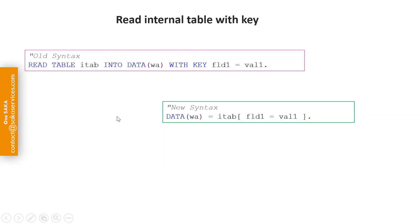This syntax is to read an internal table with a key. In the old syntax we are reading the table into a work area with a key. In 7.4 and 7.5 you can see that in one line you can declare the work area — this is like an array operation in other programming languages. You give the internal table, field, and value; the record matching that field value will be returned. This expression returns only one record.